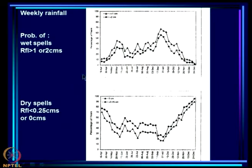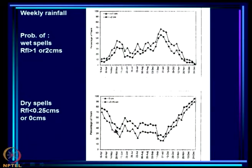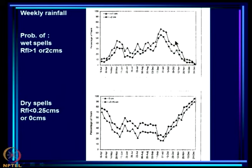These are probabilities based on 80 years of weekly rainfall data at Anandpur. We derived the probability of rain greater than 2 cm or 1 cm in a week — the wet spell likelihood — and the probability of rain less than 0.25 cm — the dry week probability. We find that from around 20th September until early August there is a huge peak in wet spells coinciding with a trough in dry spells.